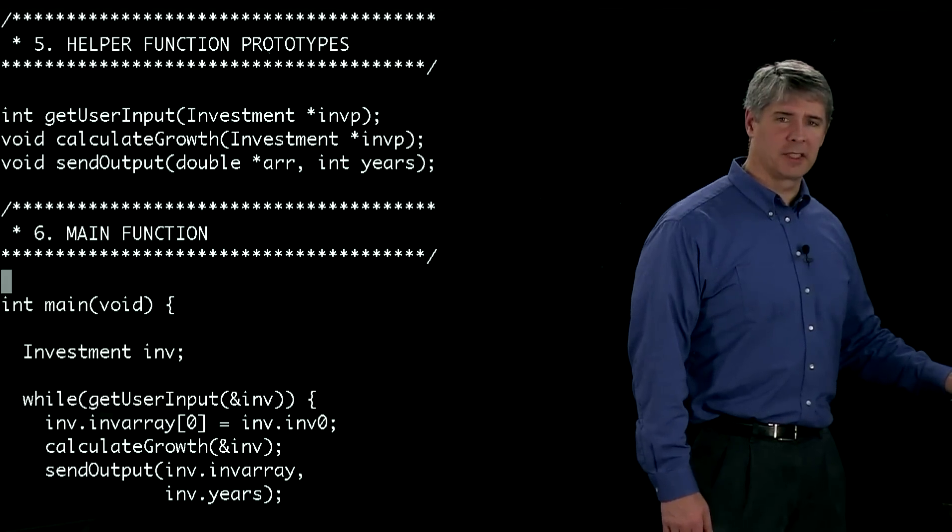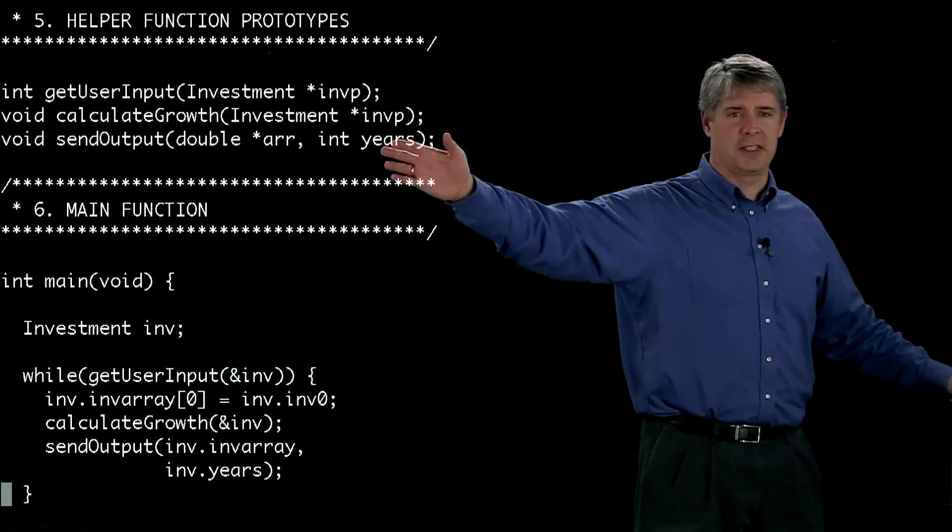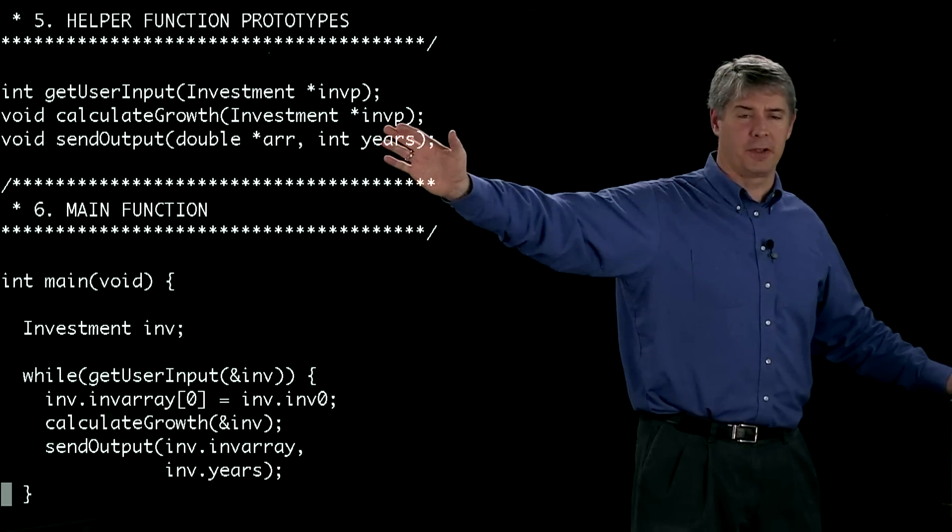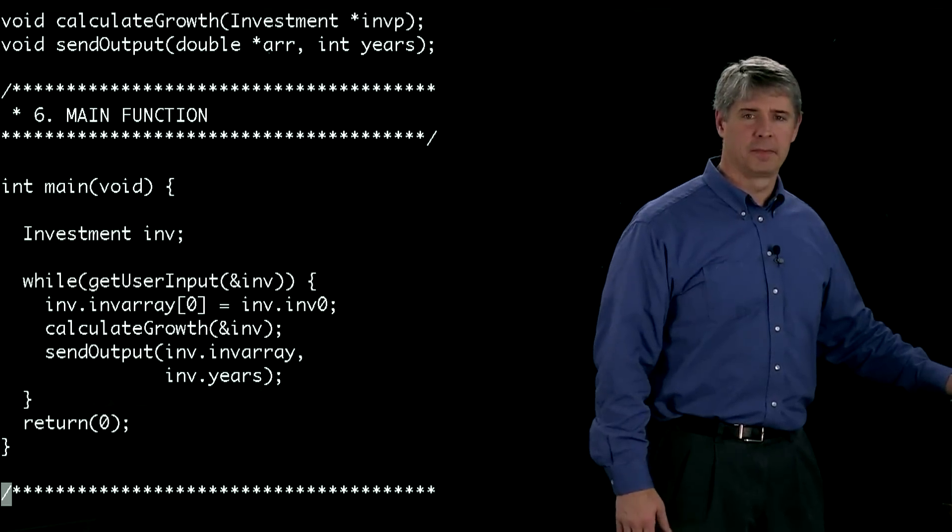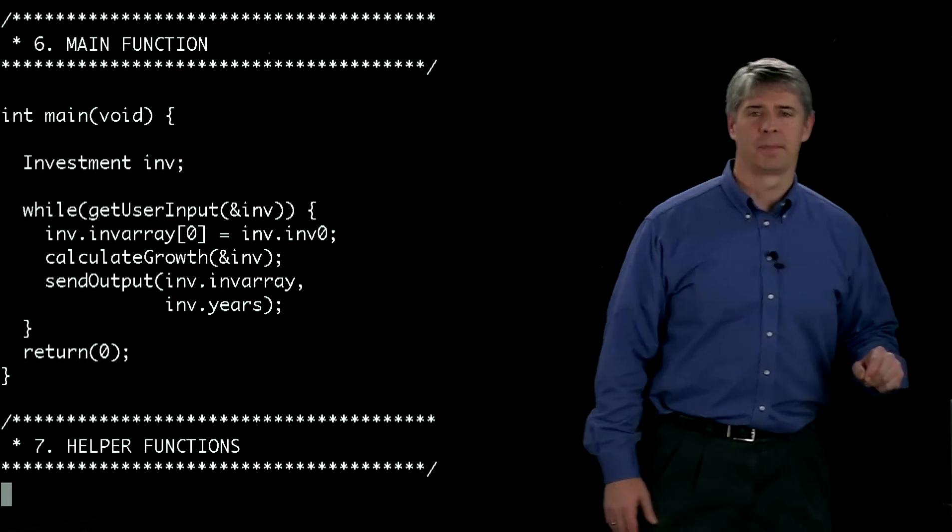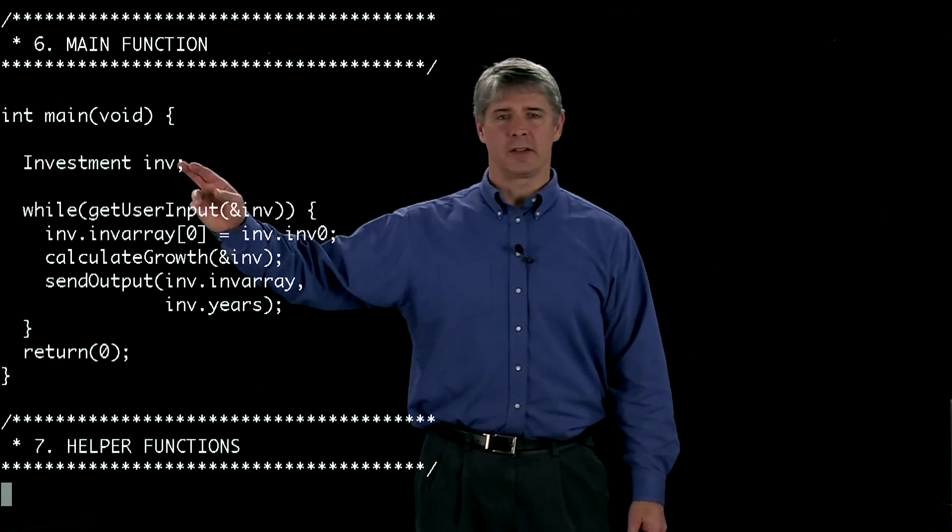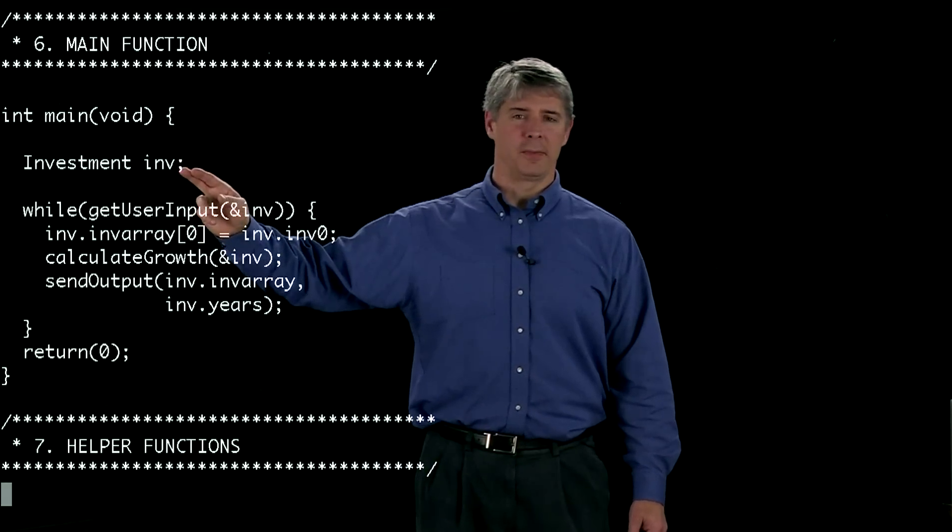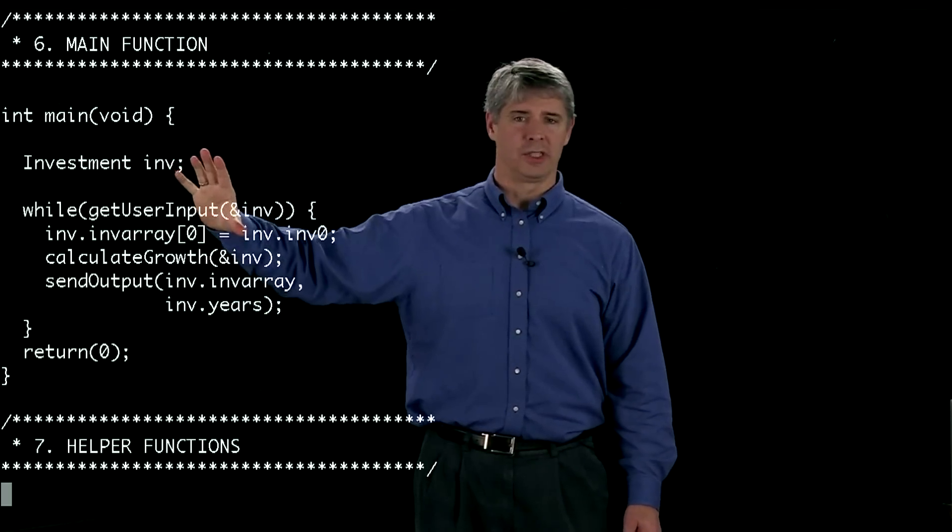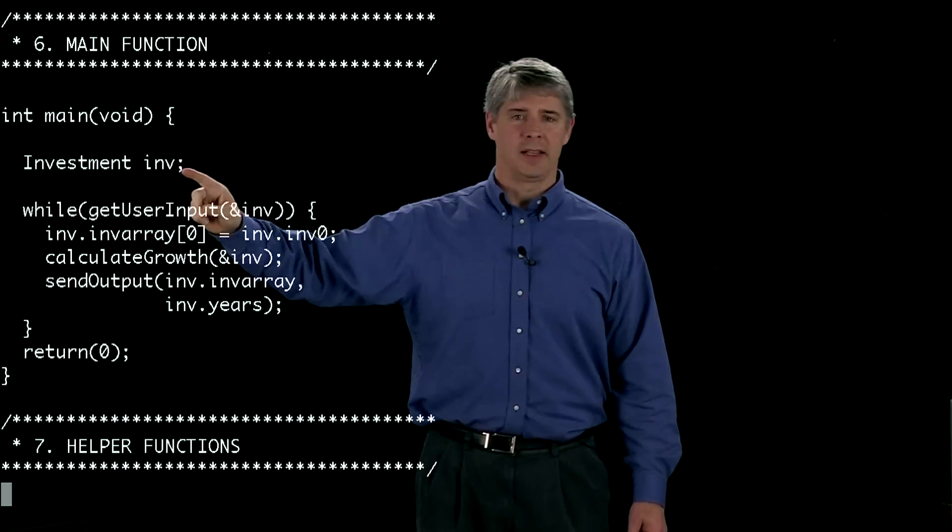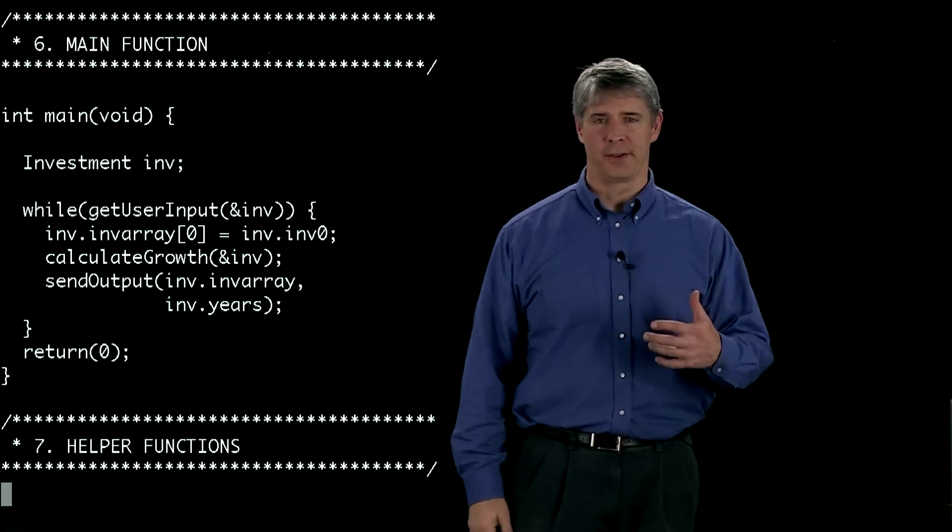So now we can go down to the main function. And the main function now is allowed to use these functions because it's already seen prototypes for them, even though it doesn't know what they do yet. That gets compiled separately. So the main function defines a single local variable, because this variable is defined inside the braces. It's local only to this function. And that variable is called inv, and it's of type investment that we defined earlier.